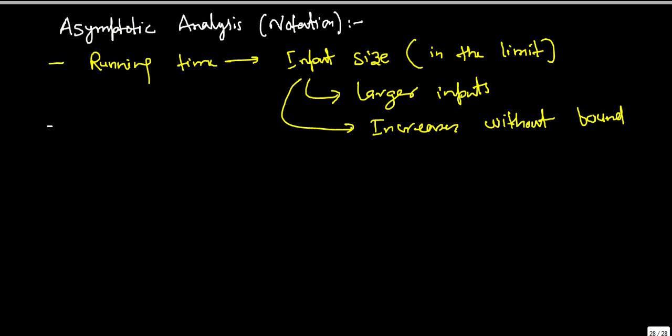And the algorithm that we will choose should have less running time at higher or larger size of input. So, the algorithm that is asymptotically more efficient will be the best choice for larger inputs.